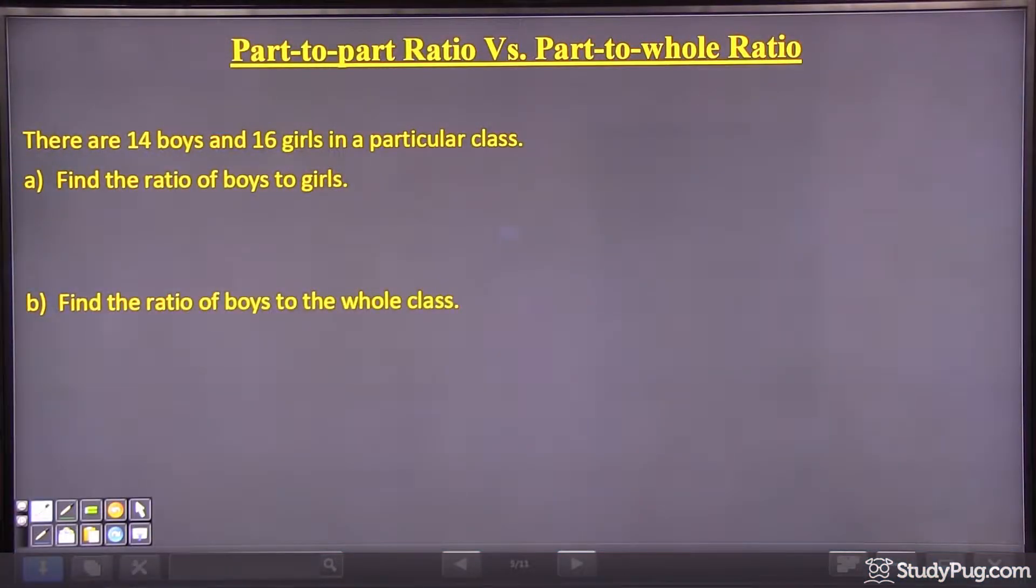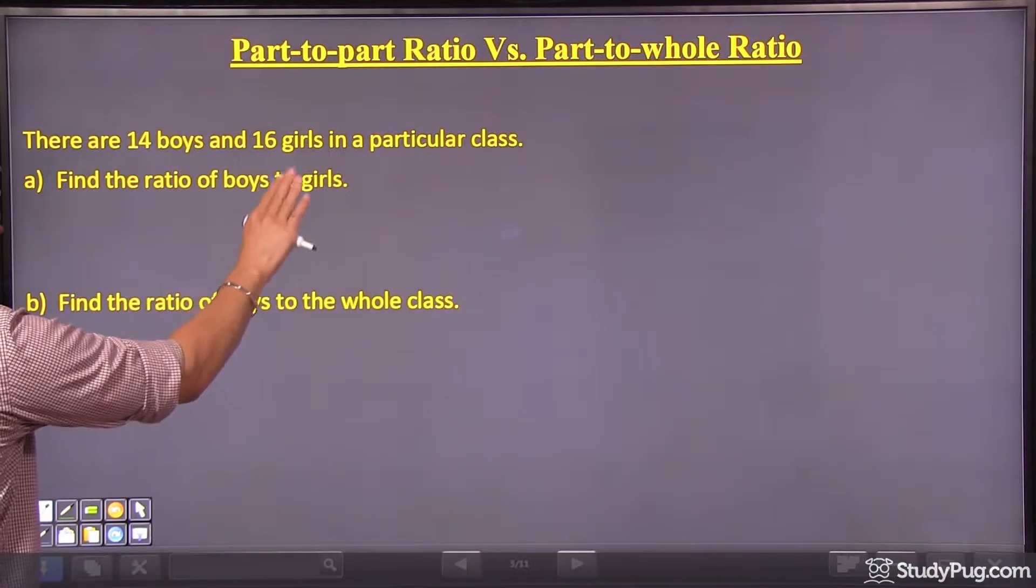There are 14 boys and 16 girls in a particular class. First of all, part A is to find the ratio of boys to girls.